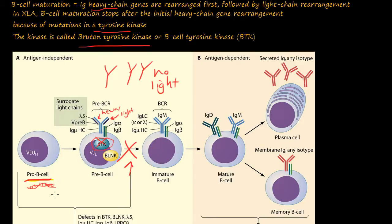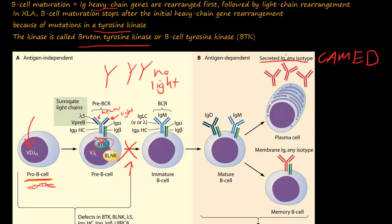The normal maturation begins with the pro-B cell, and the VDJ portion of the DNA undergoes recombination, which gives rise to all the specificity of the different immunoglobulins. The secreted Ig can be of any isotype — remember GAMED: IgG, IgA, IgM, IgE, and IgD.